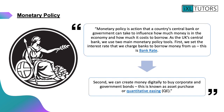In the UK our central bank is the Bank of England. The Bank of England states that monetary policy is action that a country's central bank or government can take to influence how much money is in the economy and how much it costs to borrow. As the UK central bank they use two main monetary policy tools: they set interest rates, known as the bank rate, and they create money digitally to buy corporate and government bonds, which is known as asset purchase or quantitative easing.